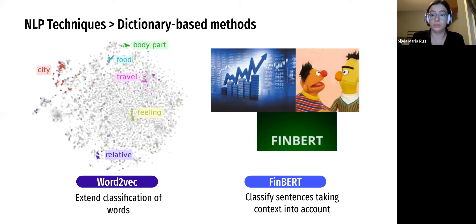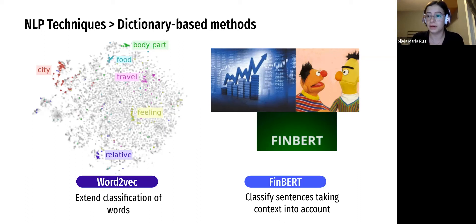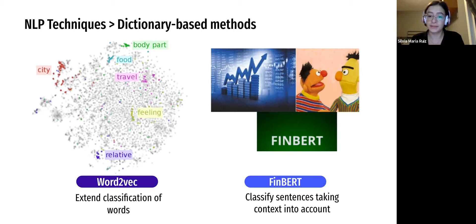The first problem was that very few words got classified by the Loughran-McDonald dictionary. In fact, on average, only 1% of the words in a report were classified as positive and about 5% as negative. The second problem is that using a dictionary-based approach is blind to context. For example, words that could be classified as negative, such as 'liability,' might not be negative depending on the context — for example, 'decreasing liability.'